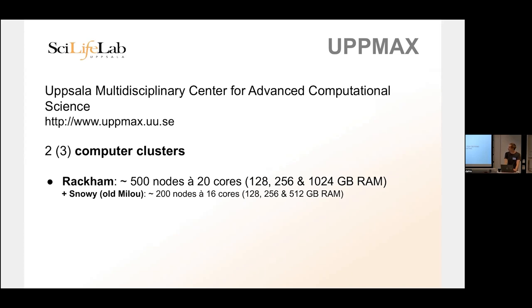They are a bit beefier than your ordinary computer. In your laptops you probably have maybe four cores, whereas these computers have 20 cores. A core is pretty much a CPU. Modern CPUs have multiple cores — the first dual-core processor was released around 2002. Before that, they only had one single core in a CPU, so you could do one type of calculation at a time. But as you started to get multi-core processors, you could have multiple programs all using one core each. It's like having more people work with you.